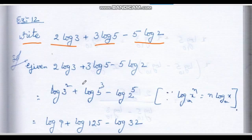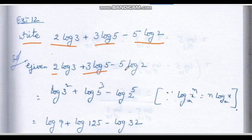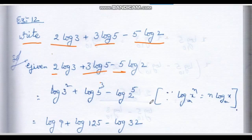We use the log power rule. The third law of logarithms states: log x to the base A equals n log x. So 2 log 3 becomes log 3 squared.